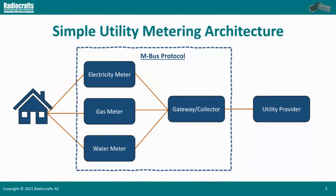In very simple terms, this is how a simple utility metering architecture looks. You have a house, for example, with an electricity meter, gas meter, and water meter, which send their billing information to a gateway or collector, which then relays that information to the utility provider. The M-Bus protocol operates only in the meter and the gateway or collector part of this architecture.